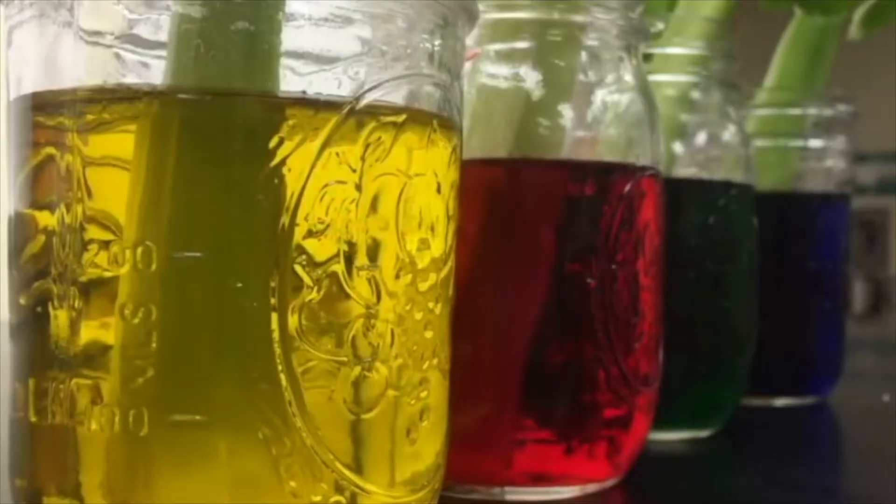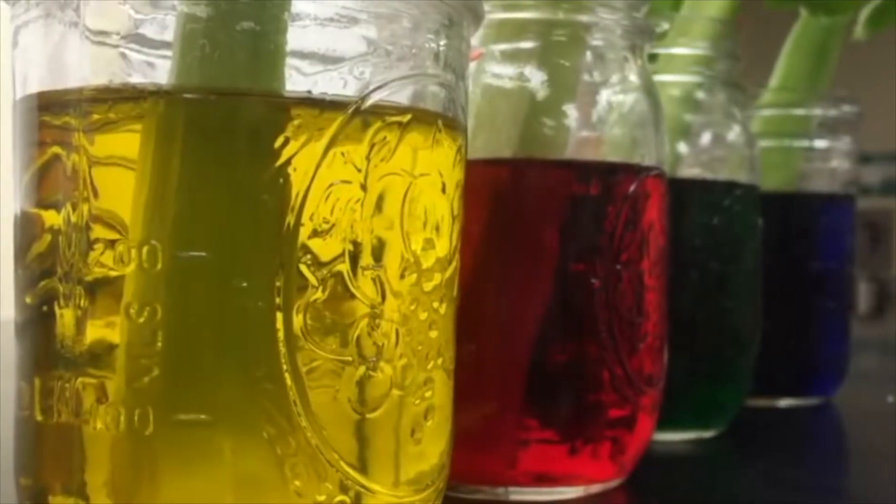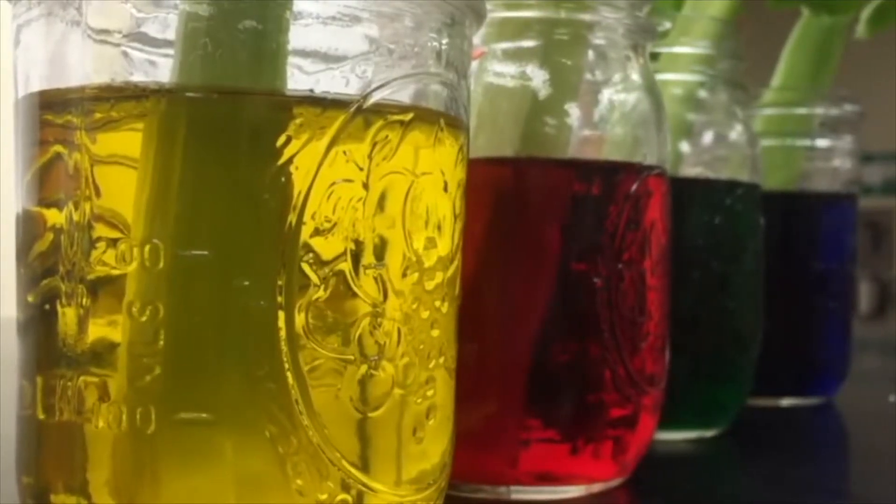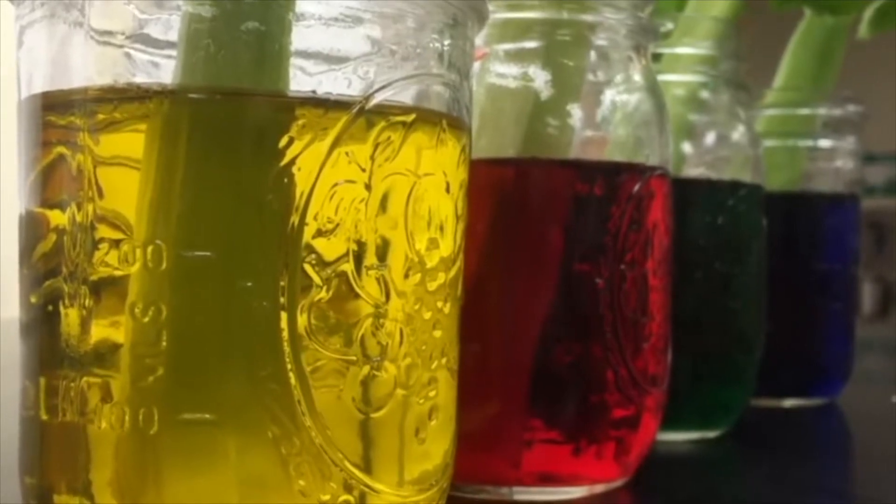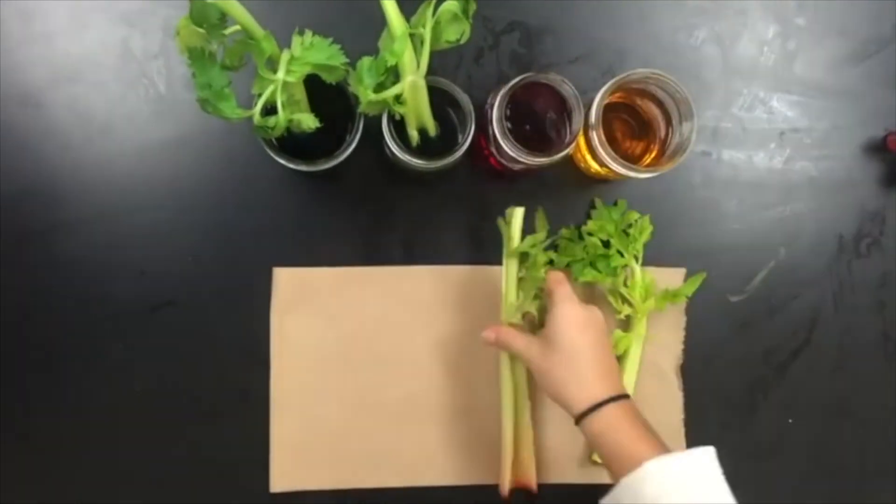Do not remove the leaves. You're going to cut the bottom so they're nice and even and place them in the different colored jars for up to 24 hours. The longer the better.